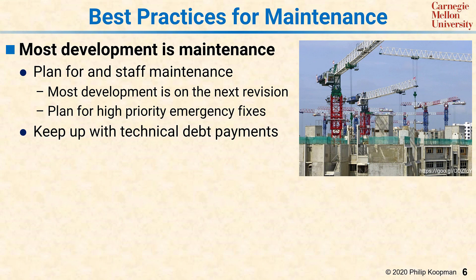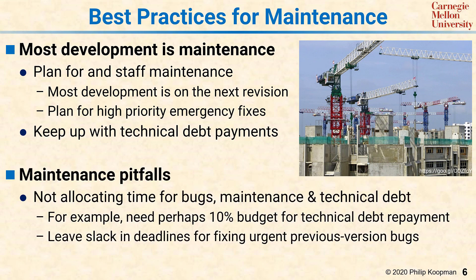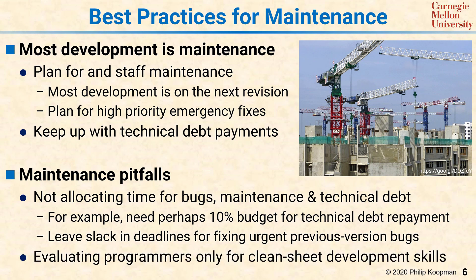The big pitfalls for software maintenance are mostly not allocating time for bug maintenance and technical debt. Everyone wants to concentrate on new features, but it should not be a surprise when a bug in a previous release needs attention — that's going to happen, so plan for it. With set-aside time not actually spent fixing bugs, you should be going and finding technical debt to repay so you don't go down into a death spiral. Another maintenance pitfall is evaluating programmers only on their ability to do clean-sheet development. That's what's emphasized in colleges and programmer training, but most programmers spend most of their time touching other people's code, and that should be a skill you really evaluate when hiring programmers.